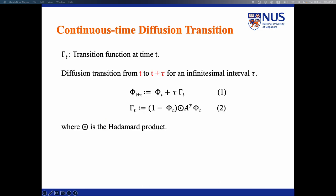Formally, let gamma t be the transition function at time t. Diffusion transition from t to t plus tau for an infinitesimal interval tau is described as follows.